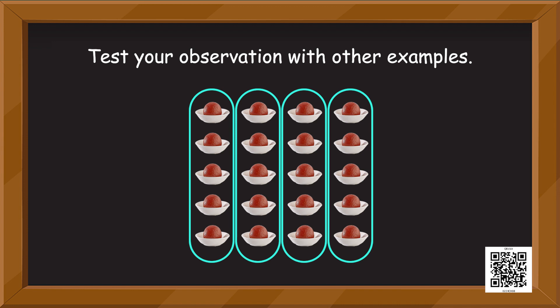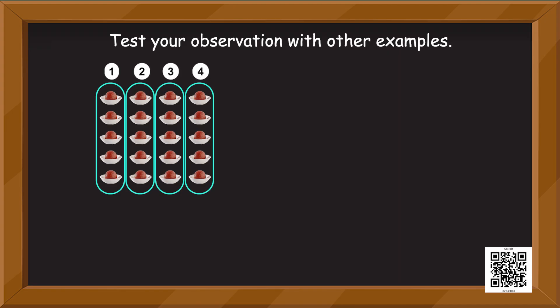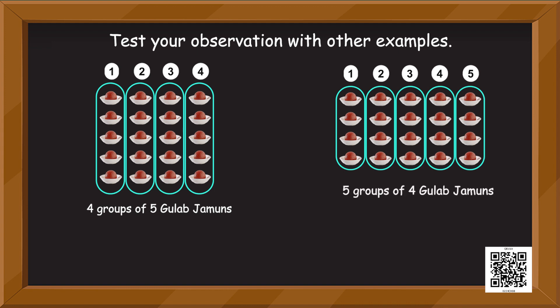My mouth is already watering — these yummy gulab jamuns! It's going to be difficult to work with gulab jamuns, but we have to. In image number one there are four groups of five gulab jamuns, and in image number two there are five groups of four gulab jamuns. Can you fill in the blanks — how many times five, four into five equals what? How many gulab jamuns are in the first image? Can you do the second one on your own?